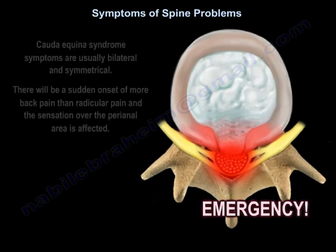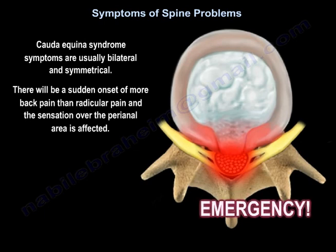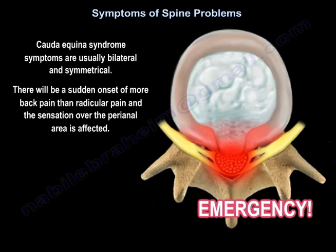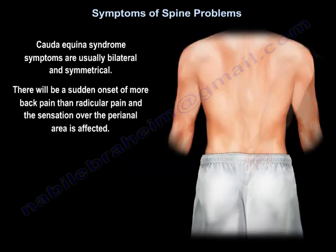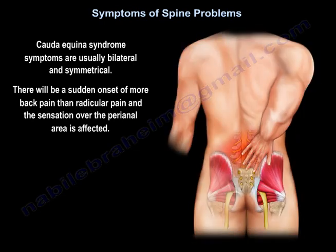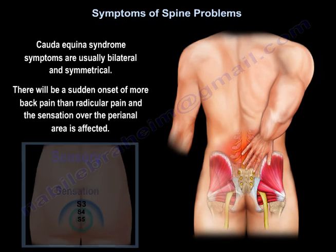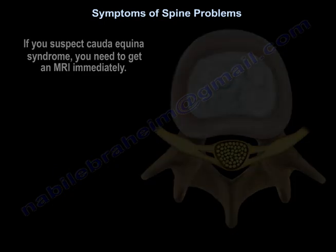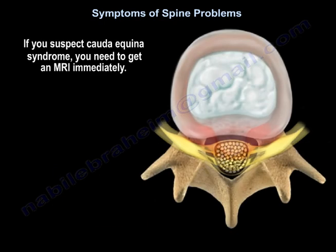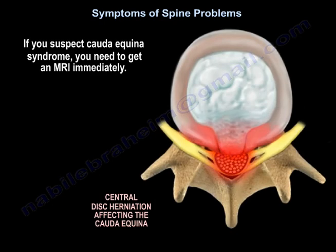In cauda equina, the symptoms are usually bilateral and symmetrical. There will be sudden onset of more back pain than radicular pain, and the sensation over the perianal area is affected. If you suspect cauda equina, you need to get an MRI immediately.